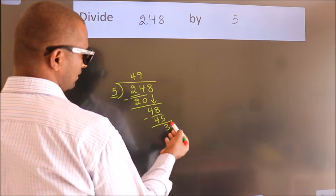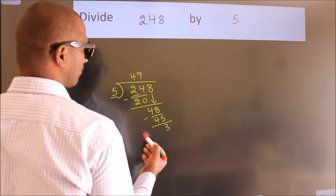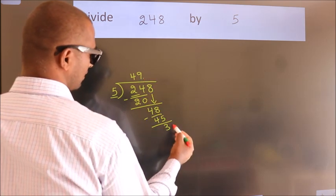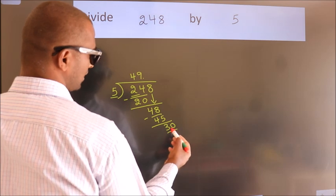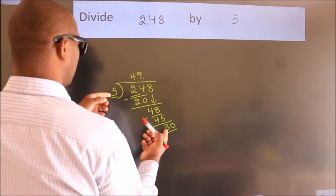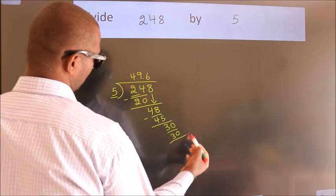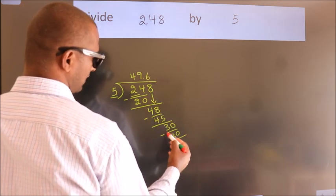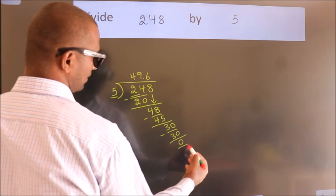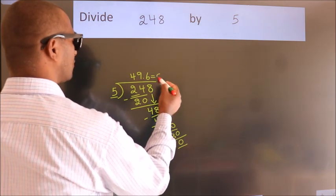After this, no more numbers to bring down. So what we do is put a decimal point and take 0, so 30. When do we get 30 in the 5 table? 5 times 6 is 30. Now we subtract, we get 0. We got remainder 0, so this is our quotient.